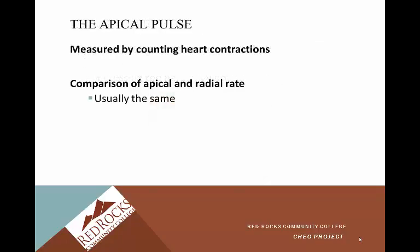The apical pulse is measured by counting heart contractions. A lot of times you'll compare the apical and radial pulse — they should usually be the same. This may be another type of pulse you're asked to take, and we'll talk about this in skills lab as well.